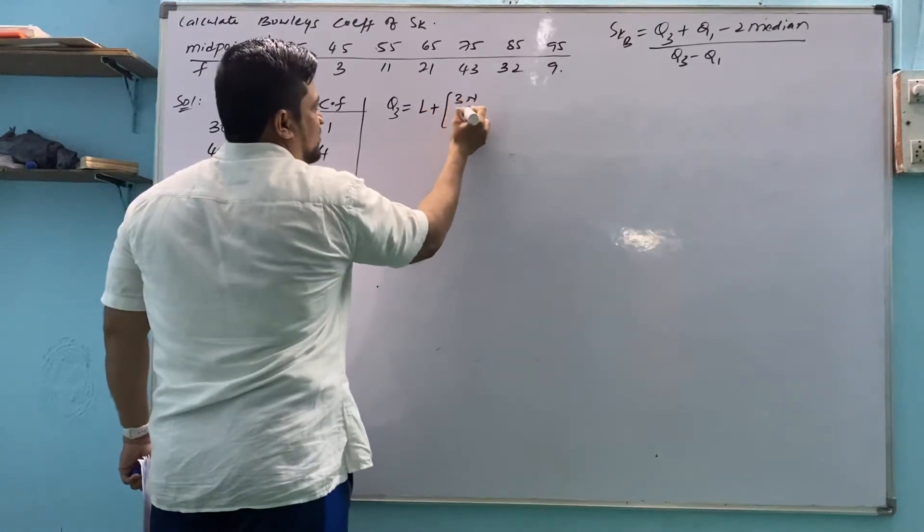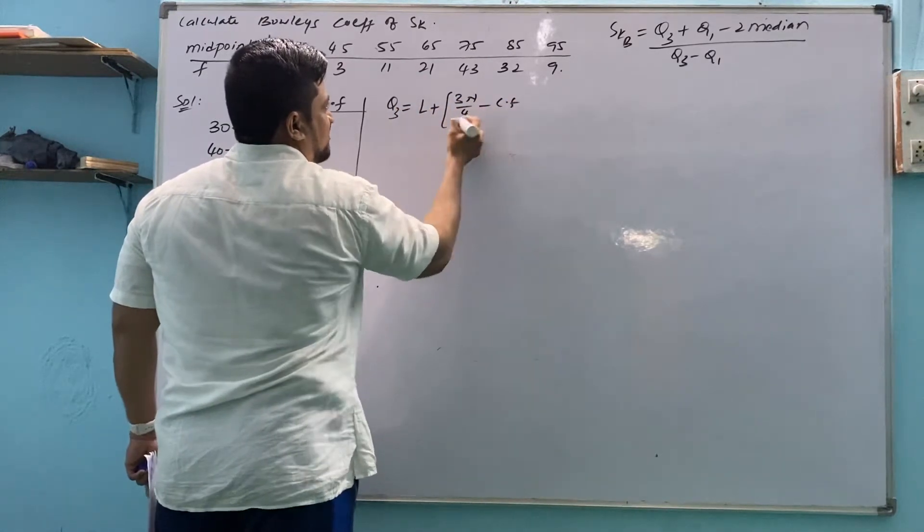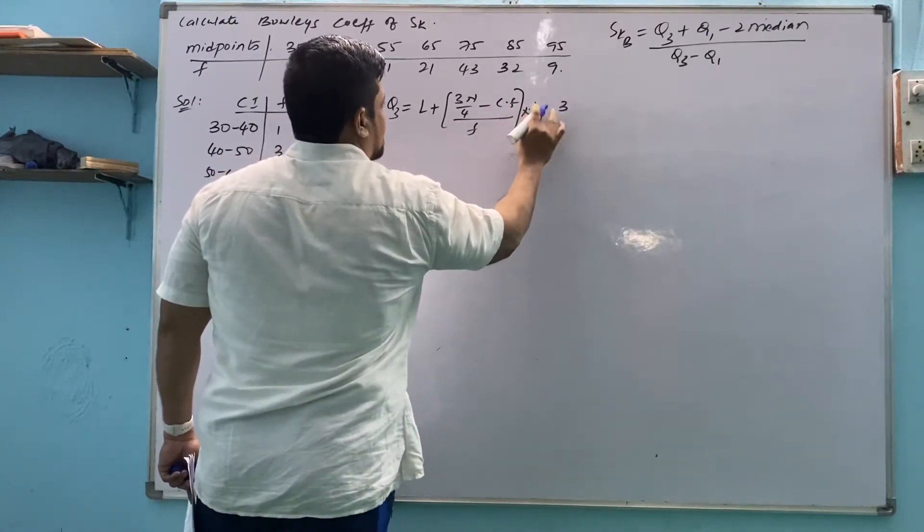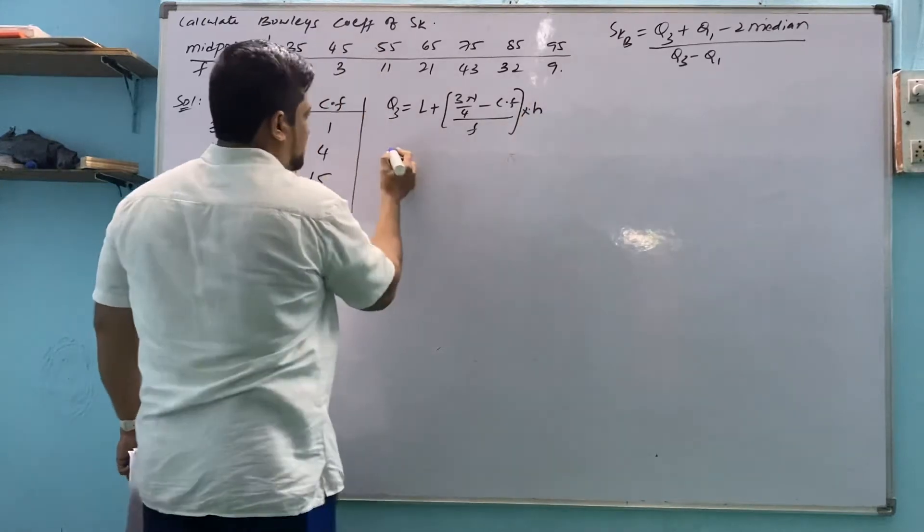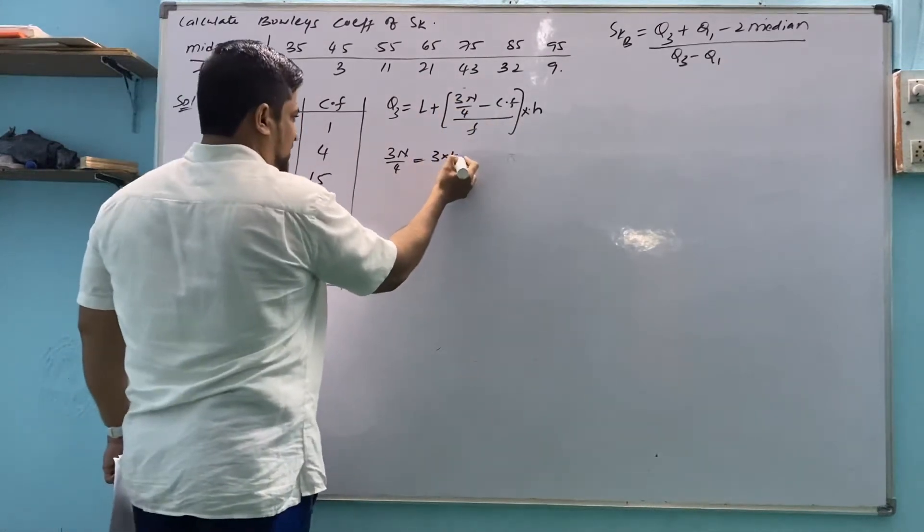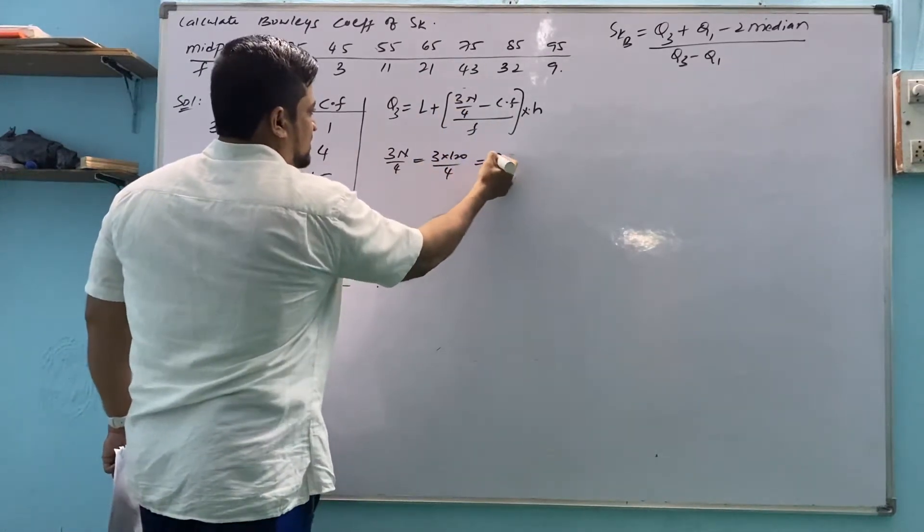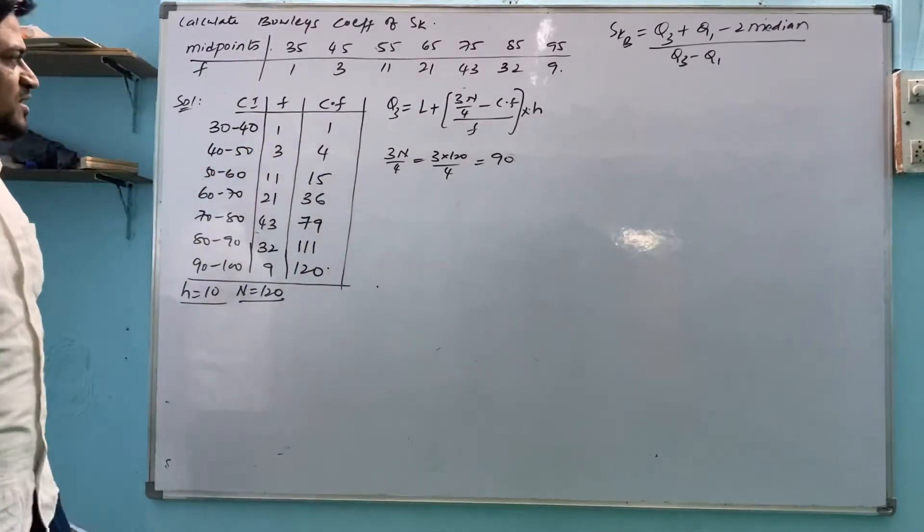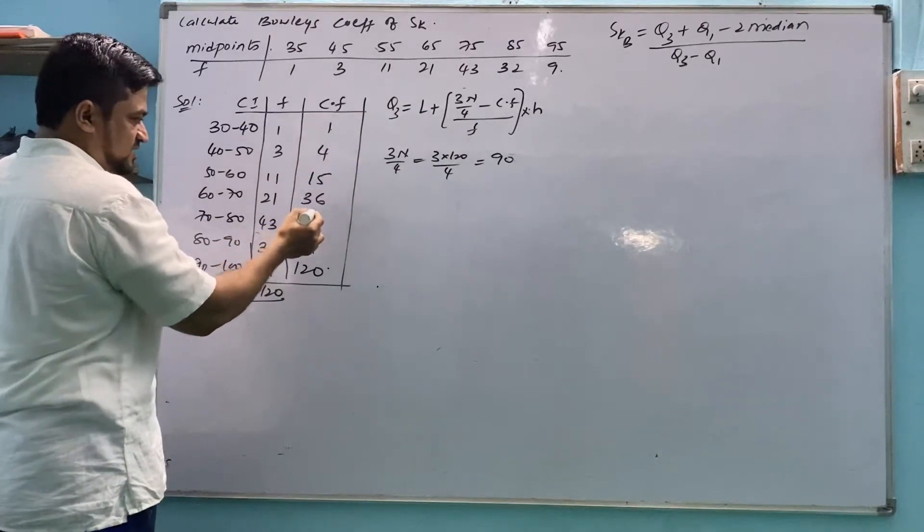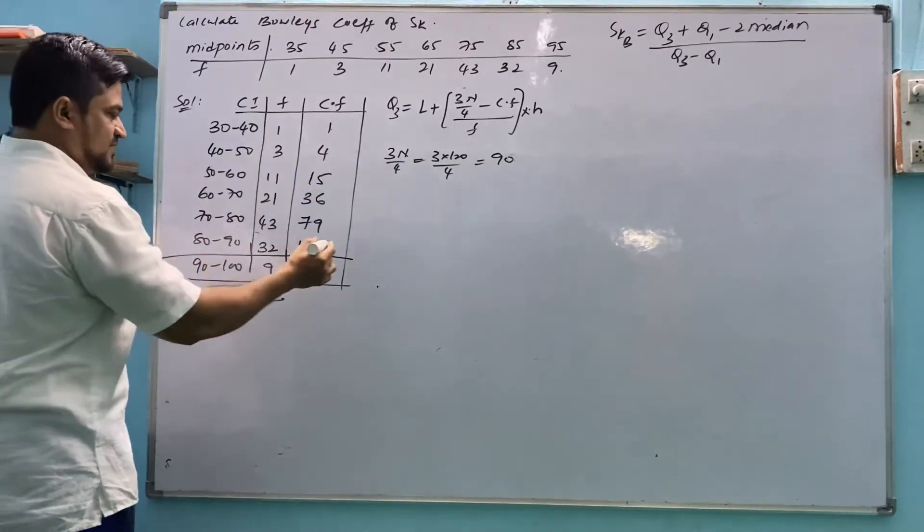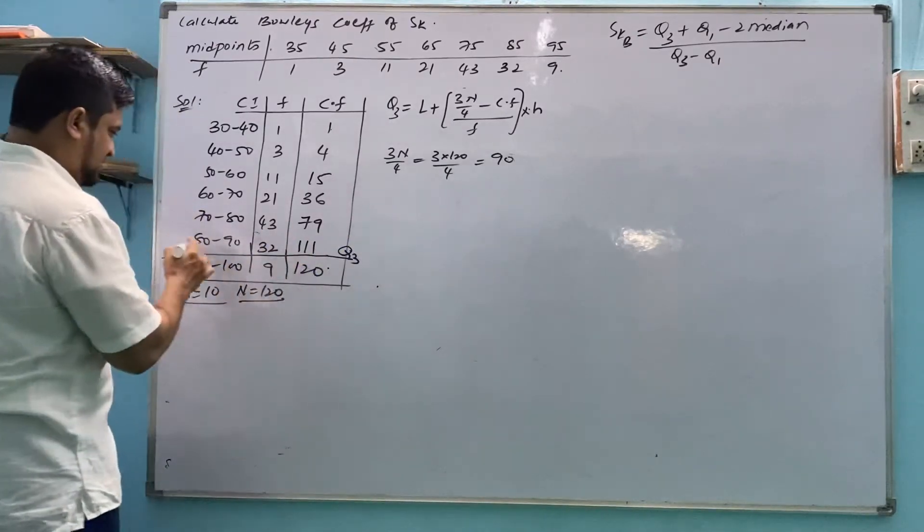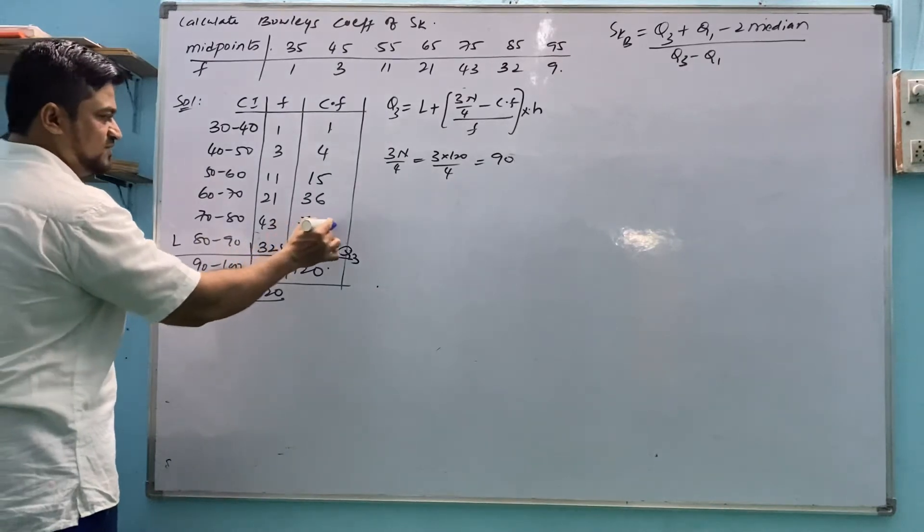We have 3n by 4 minus cf by small f into h. So what do we find now? 3n by 4. You can find here also, no problem. First we find this value. 3n by 4. 3 into 120 by 4. This is 90. Where we find 90? In 79 we can't include 90. 36, and here we can include 90. This is Q3 class: lower value, frequency, opposite upper value cf.